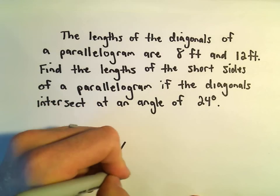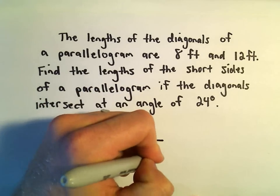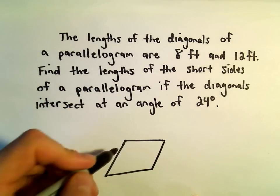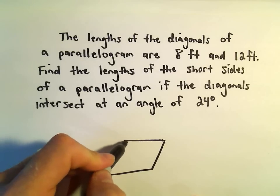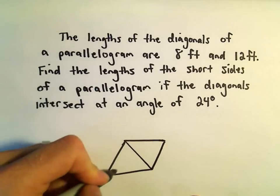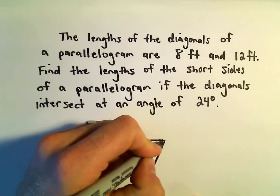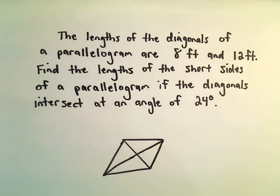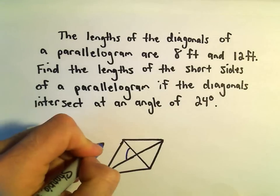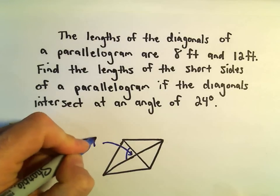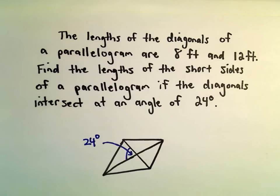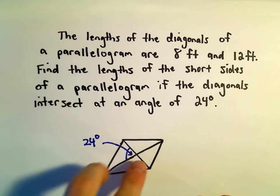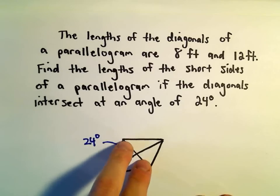Let's see if I can make a sort of parallelogram there. That looks okay. The diagonals intersect at an angle of 24 degrees, so this angle, that'll be our angle of 24 degrees. Again, for a parallelogram, recall that the diagonals intersect and cut the diagonals in half.